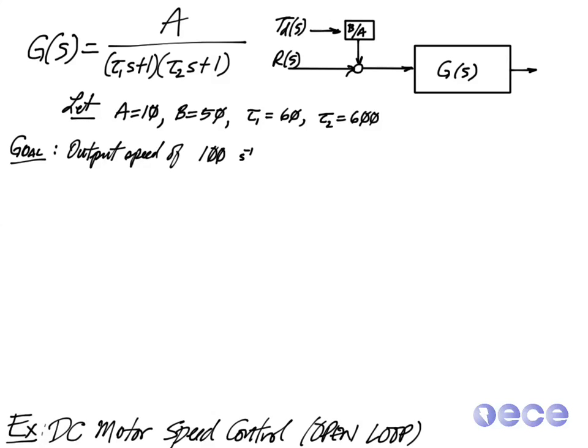So my goal, my design goal, is that I'd like to have an output speed of 100 radians per second.